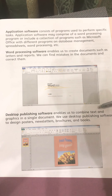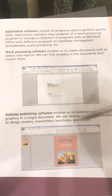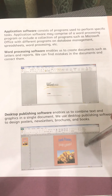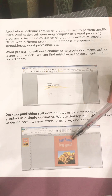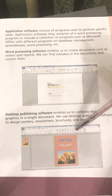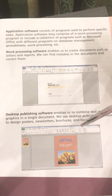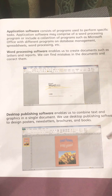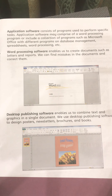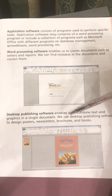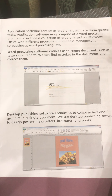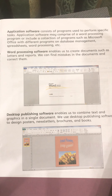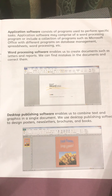Desktop publishing software enables us to combine text and graphics in a single document. As you can see, this is desktop publishing software with which we can combine text and pictures. With the help of it you can make cards, invitation letters, any document, and even the title of a book. We use desktop publishing software to design posters, newsletters, brochures, and books.